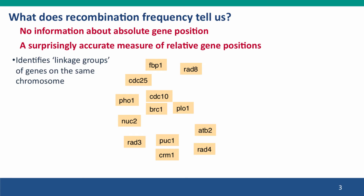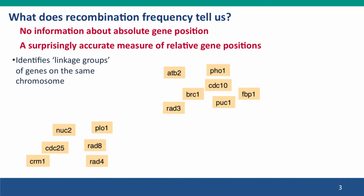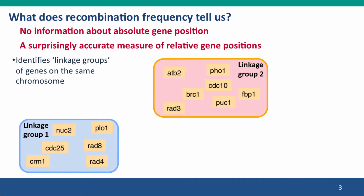The first thing that recombination frequency tells us is that it defines what we call linkage groups — those are groups of genes that are linked to each other; they're on the same chromosome. So here we've identified two linkage groups, and we've used recombination to sort the genes into them. Within each linkage group, the genes are all on the same chromosome. They may be directly genetically linked to each other or indirectly linked — we'll come back to this distinction at the end of the lecture.